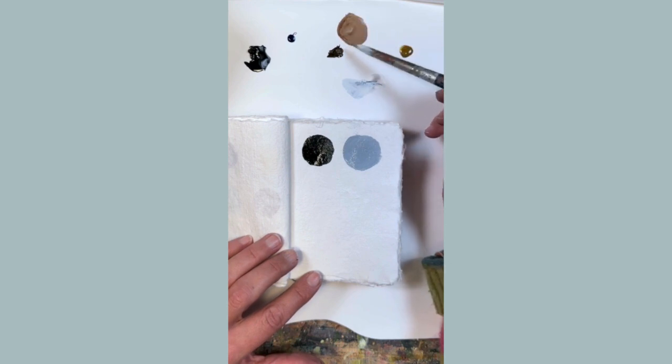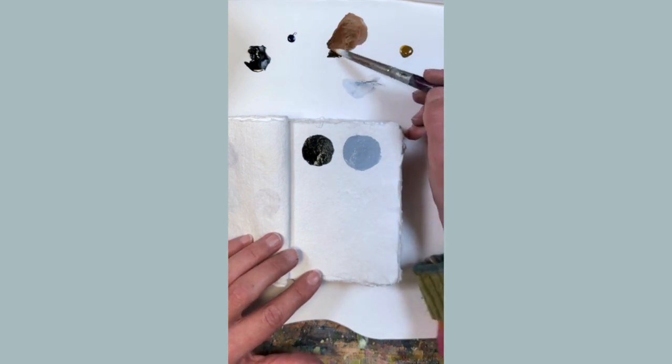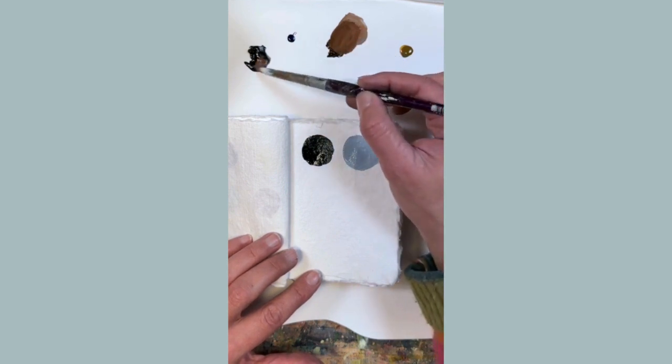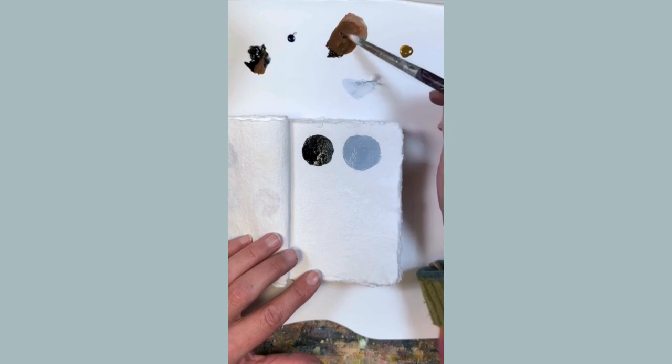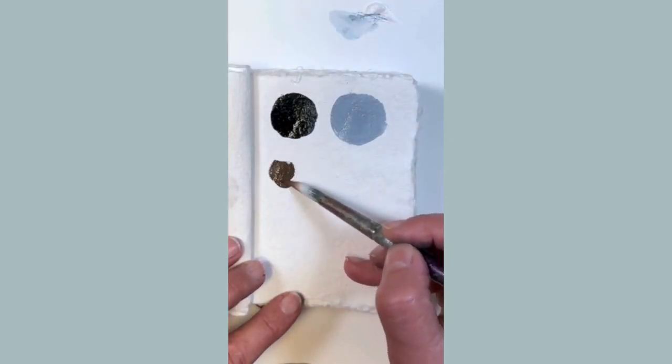If I mix a bit of brown, the Van Dyke brown with white on my brush, I get just a tint and a tone of brown. That is the mud brown color.